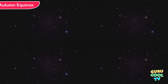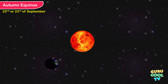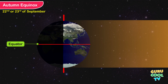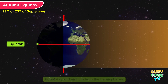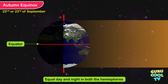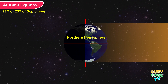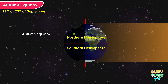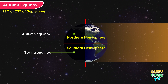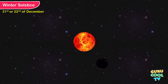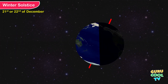Autumn Equinox: on the 22nd or 23rd of September, the overhead Sun is again on the equator, giving the autumn equinox with equal length of day and night in both hemispheres. At this time, the northern hemisphere experiences the autumn equinox. Winter Solstice: on the 21st or 22nd of December, the overhead Sun is over the Tropic of Capricorn.